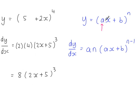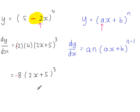The a here is just the coefficient of x, which in this case is 2. Now let's look at what happens if that sign was a minus and not a plus. If we have 5 minus 2x, the coefficient of x is minus 2 — you have to take the sign with it, it's minus 2 times x. So here it's minus 2 times 4, so this becomes minus 8, giving minus 8 times (5 minus 2x) to the power of 3.